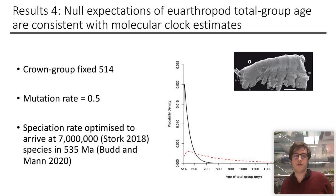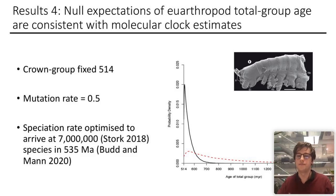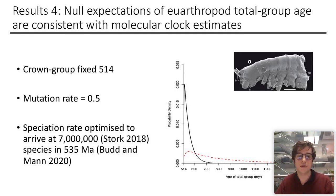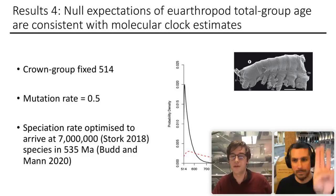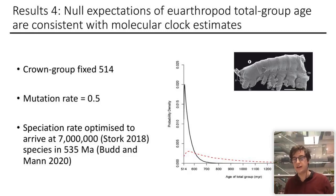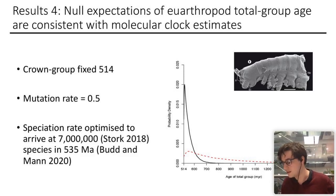Our parameters had to be changed for this. Crown groups were fixed at 514 million years, based on the fossil Eucaris, which is the oldest undisputed crown euarthropod fossil. The mutation rate was set at 0.5 as before, and the speciation rate was optimised to arrive at 7 million species in 535 million years based on conservative estimates from the literature. The total groups are again exponentially distributed, and 95% of them fall between 515 and 670 million years.